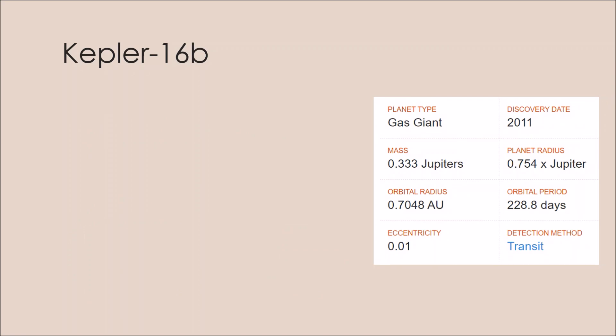Zooming in, Kepler-16b has approximately a third of the mass of Jupiter and has an incredible orbit that's almost a perfect circle with an eccentricity of 0.0069. It also orbits around both of its stars every 229 days.